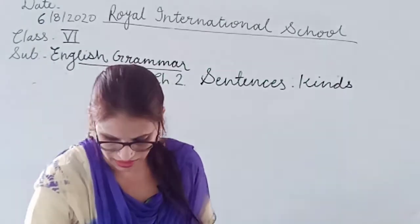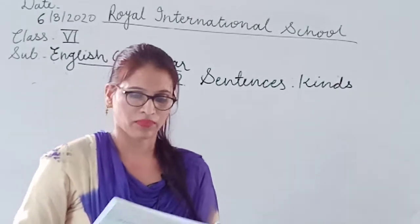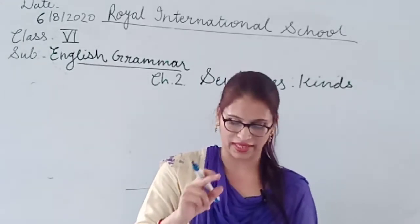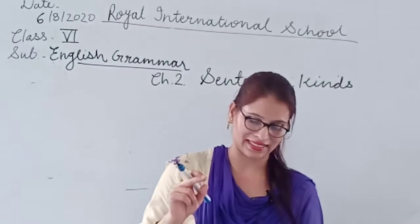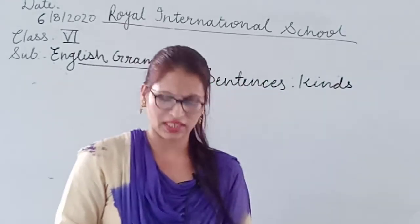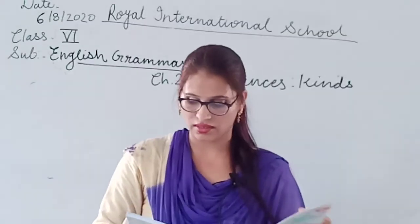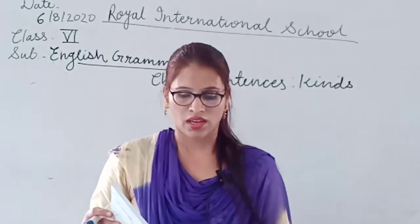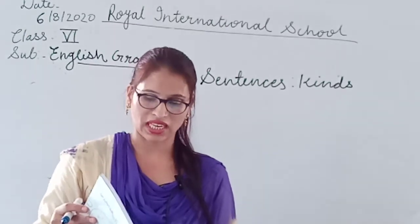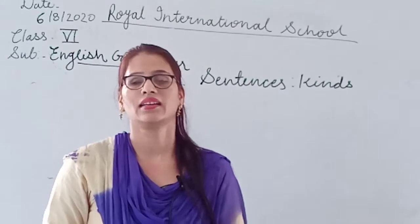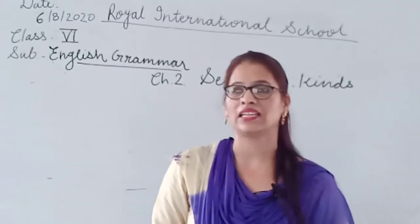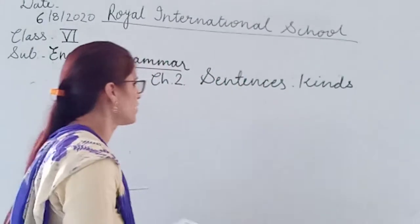We have solved the exercise on page number 7 - circle the subject and underline the predicate. Then we have an exercise to add a predicate to each subject given below to make a complete sentence, and there is a PDF for that. We also need to add a subject to each predicate given below. Exercise C, D, and E are in the PDF. Now I am going to start with the second chapter - kinds of sentences.